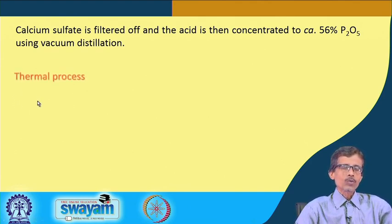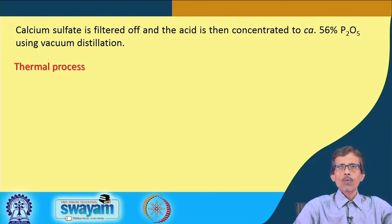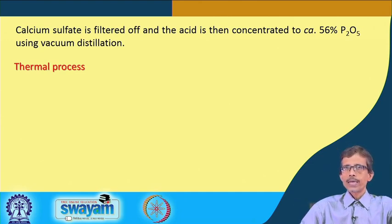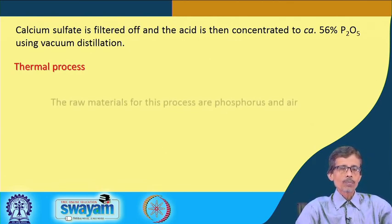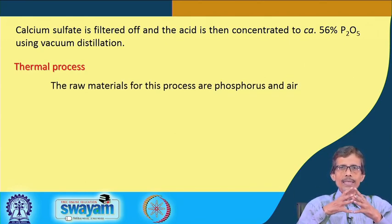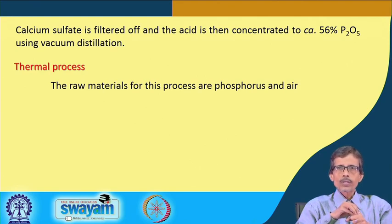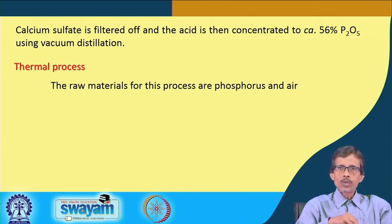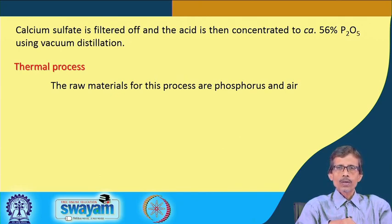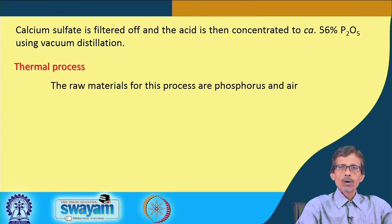From the wet process we can get up to 56 percent concentrated phosphoric acid. The other process to consider is the thermal process — that means heating something which is burnt to ultimately give phosphoric acid. The thermal process utilizes elemental phosphorus directly. The wet process used phosphate rock or apatite treated with sulfuric acid, but if we obtain elemental phosphorus — white or red phosphorus — from the phosphate rock, we can use that to make pure quality phosphoric acid.